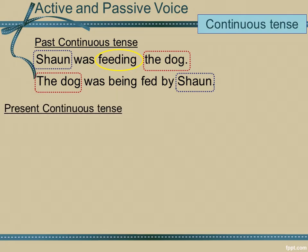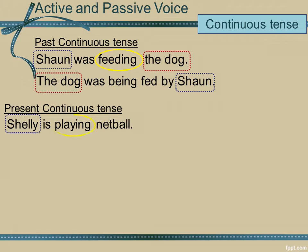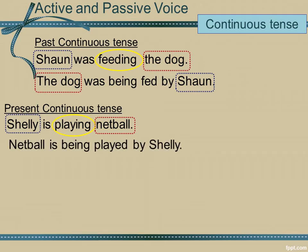Present continuous tense: Shelly is playing netball. Shelly is my subject, playing the verb, netball the object. I need only switch them around. Again I added the word 'being' in the present continuous tense in the passive voice. The sentence reads: netball is being played by Shelly.